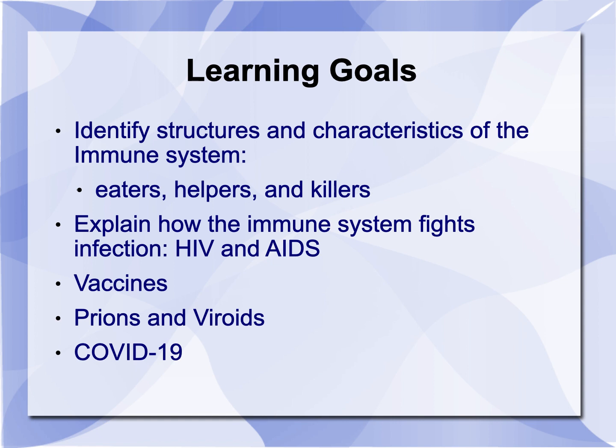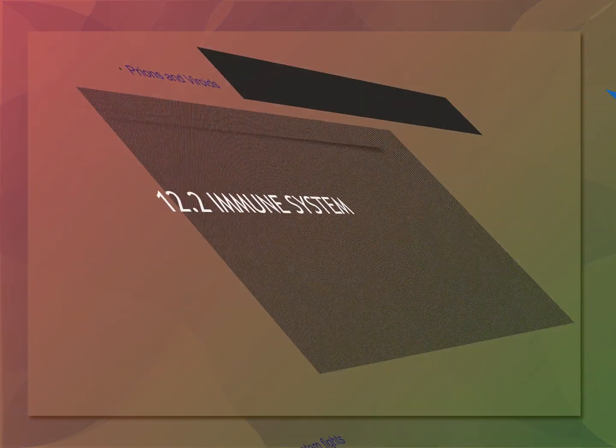Explain how the immune system fights infections, such as HIV and AIDS. We'll get into a little bit about vaccines, we'll talk prions and viroids, and then lastly finish up with some current information about COVID-19.